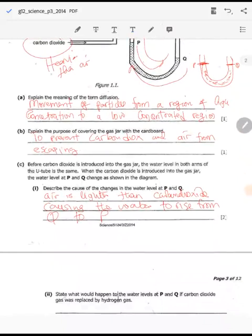Another question states: What would happen to the water level at P and Q if carbon dioxide was replaced by hydrogen gas? Now if they had to replace carbon dioxide by hydrogen gas, what would be the effect? Here is what you need to know: if they put hydrogen here instead of carbon dioxide, hydrogen is very light. So if hydrogen is light, the air here becomes heavier. Now if the air becomes heavier, it's got the ability to push this water down.